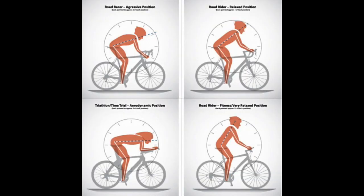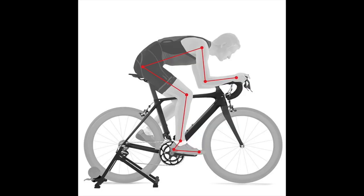When torso angle is changed, it has also been shown to affect muscular activation. As torso angle is decreased to allow riders to become more aerodynamic, a significant increase in crank torque occurs due to different muscle activation patterns.